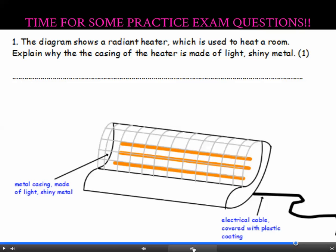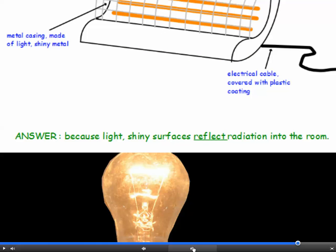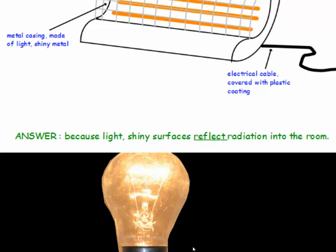OK, time to start practising some exam questions. The first one. The diagram shows a radiant heater, which is used to heat a room. Explain why the casing of the heater is made of light, shiny metal. Because light, shiny surfaces reflect radiation into the room.